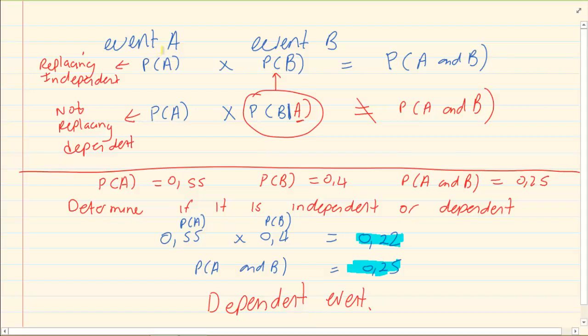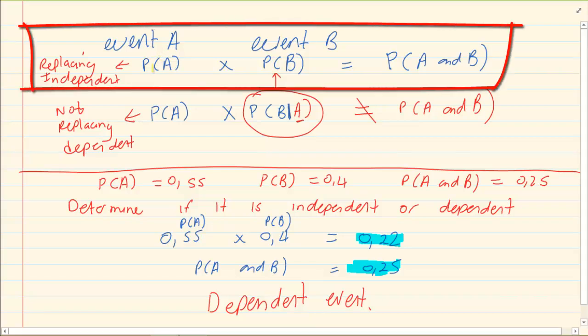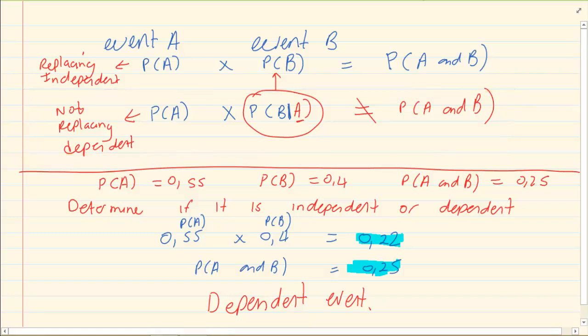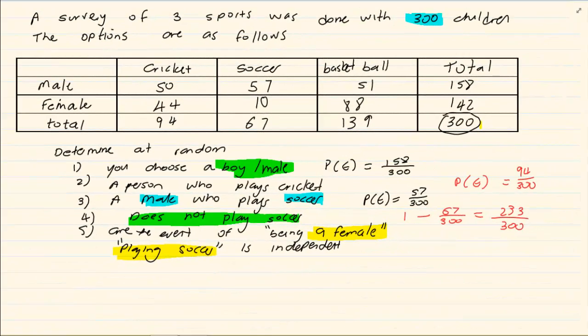We have discussed it when they are independent then P(A) times P(B) is equal to P(A and B). But when they are dependent then P(A) times P(B) would not equal to the original of P(A and B). If you look here.